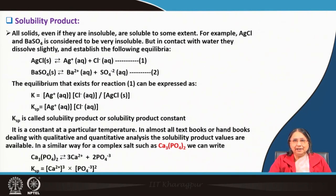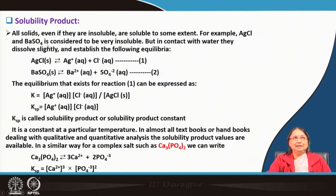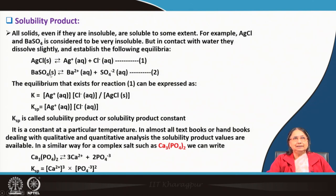Solubility product is very important for chemical equilibrium. Even solids that are very insoluble are still soluble to some extent. For example, silver chloride and barium sulphate are very insoluble, but in contact with water they slightly dissolve, producing the corresponding ions and establishing equilibrium: AgCl(s) goes to Ag⁺(aq) + Cl⁻(aq), and BaSO₄(s) goes to Ba²⁺(aq) + SO₄²⁻(aq).